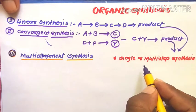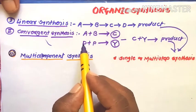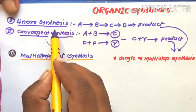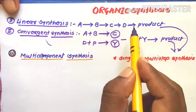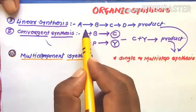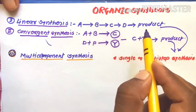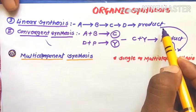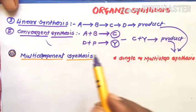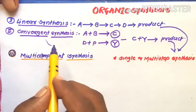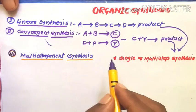In single or multi-step synthesis, the molecules proceed through different steps, as in linear synthesis: A converts to B, B to C, then D, then the product. With increasing steps in synthesis, there is a greater chance of decreasing the percentage yield of the product. Therefore, these are less economical and less environmentally friendly reaction routes.